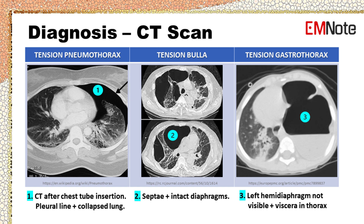CT scan is the best way to evaluate the diagnosis of tension gastrothorax, with identification of communication between the stomach and thorax. Chest CT scans can show the stomach herniated through the diaphragmatic defect with significant distension, with or without air-fluid level.